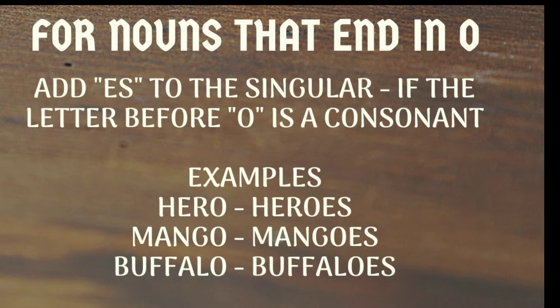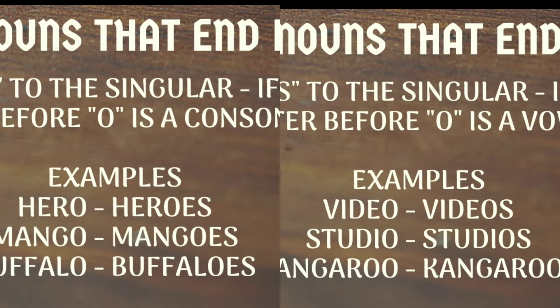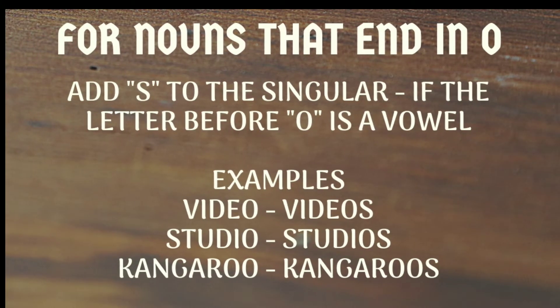Mango — mangoes. Buffalo — buffaloes. But if the letter before O is a vowel, we just add S. For example, video — videos. Studio — studios. Kangaroo — kangaroos.